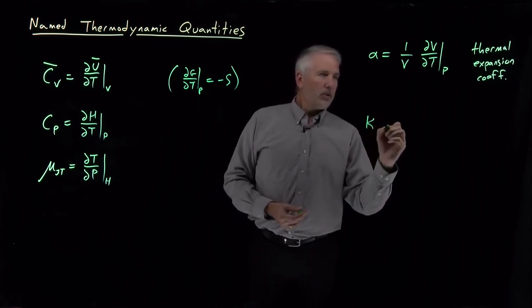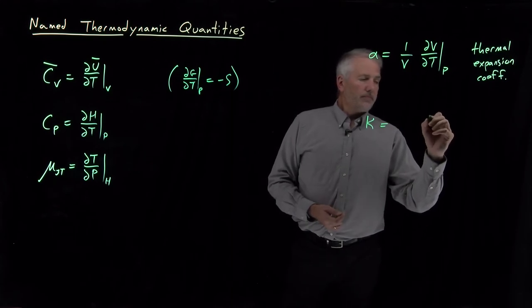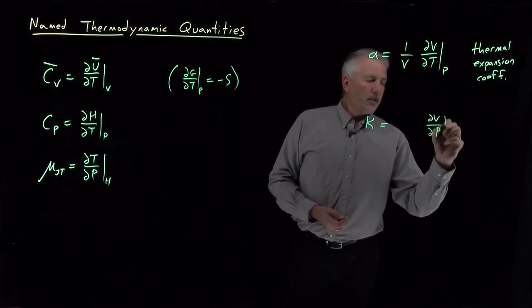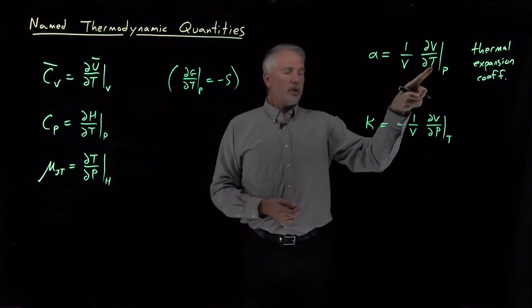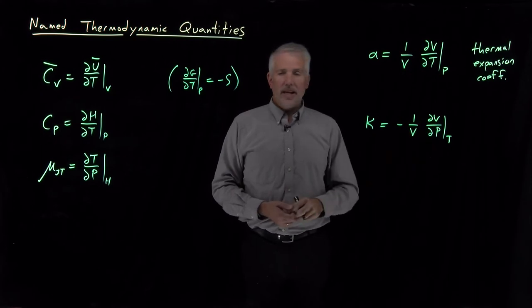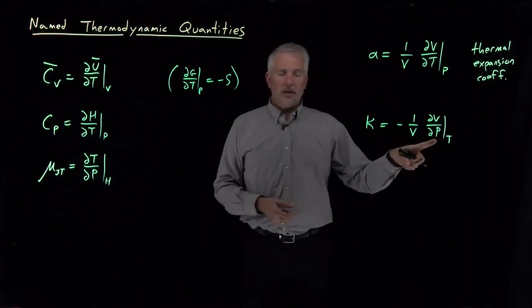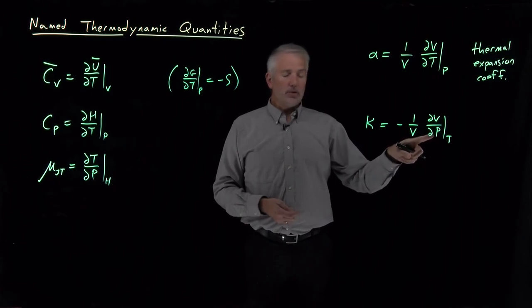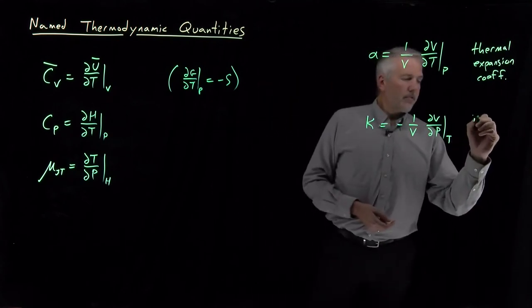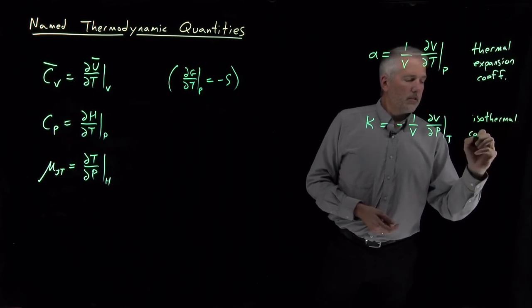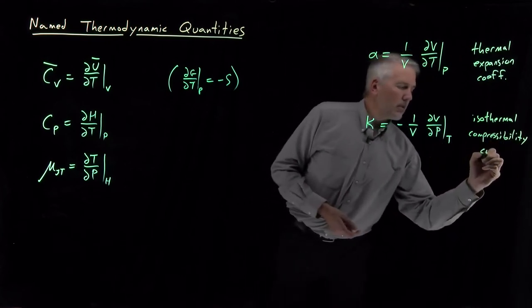A second equally important named thermodynamic quantity is the isothermal compressibility. That one looks similar, but now instead of asking how much the volume changes as I heat something up, now we're asking how much the volume changes as I increase the pressure on something. If I squeeze on an object to increase the pressure, its volume is going to go down. That's an important property of the material to know how much it will decrease in volume as its pressure increases, in particular when we do that isothermally.